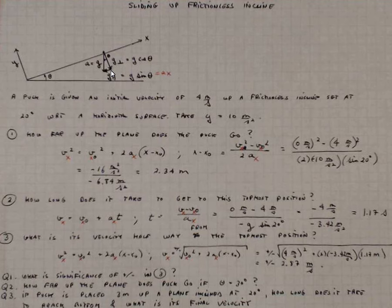Which is 0 minus 4 meters per second over minus g sine theta. I'm using the magnitude of this g parallel here, bookkeeping the proper sign.